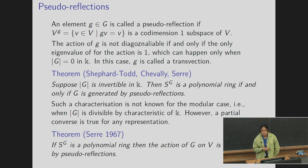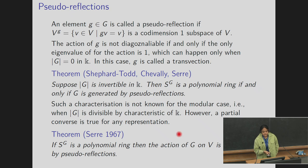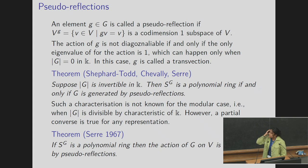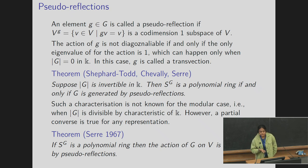However, in the modular case such a characterization is not known. There is a partial converse which says that if S^G is a polynomial ring then the action is generated by pseudo reflections. But in the modular case, already in dimension 4, there are examples where V is generated by pseudo reflections but S^G is not a polynomial ring. Therefore we need more conditions in the modular situation.